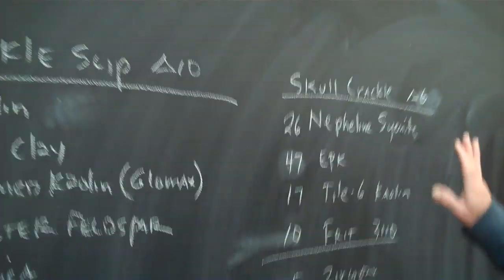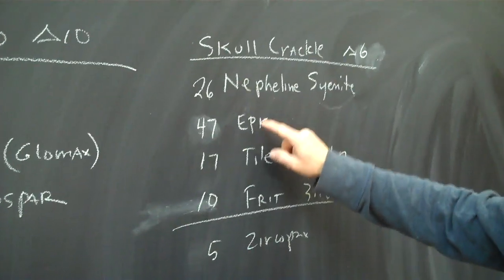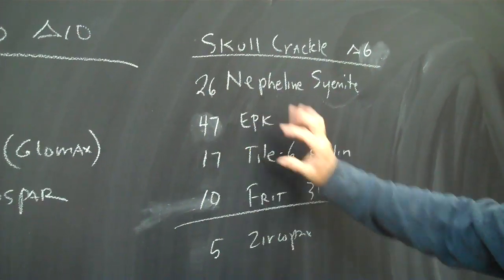These are the recipes. Here is the recipe I was using. It had a bunch of nepheline syenite, a bunch of clay, kaolin, and some frit.